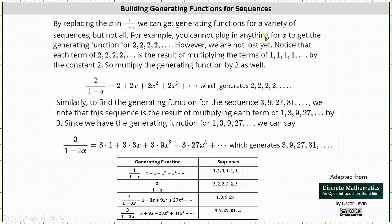For example, we cannot substitute anything for x to get the generating function for a sequence of 2s. However, notice that each term of the sequence of 2s is a result of multiplying the terms of the sequence of 1s by the constant 2. So we multiply the generating function for the sequence of 1s by 2, which gives us 2 times 1 divided by 1 minus x, which simplifies to 2 divided by 1 minus x — the generating function for a sequence of 2s.